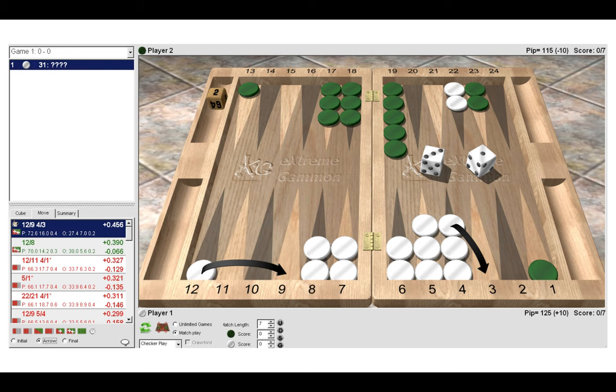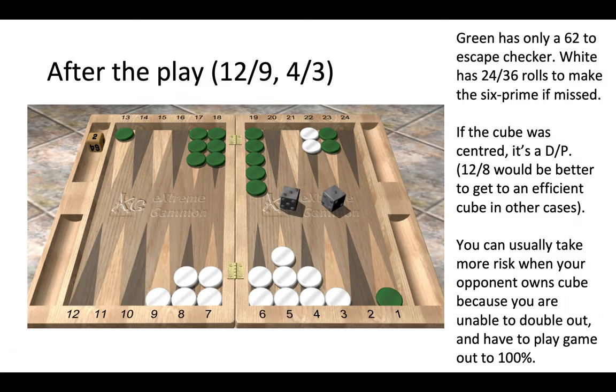We make a double slotting play—we slot both the back and the front of the five prime. Five primes are incredibly strong. If we were to make the safer play 12 to 8, that would be an error. We make the double slotting play. It's worth mentioning that if the cube was centered, it would actually be correct to make the second best play, 12 to 8. We'll talk about that in a moment. But with the cube on the opponent's side, we play 12 to 9 and 4 to 3.